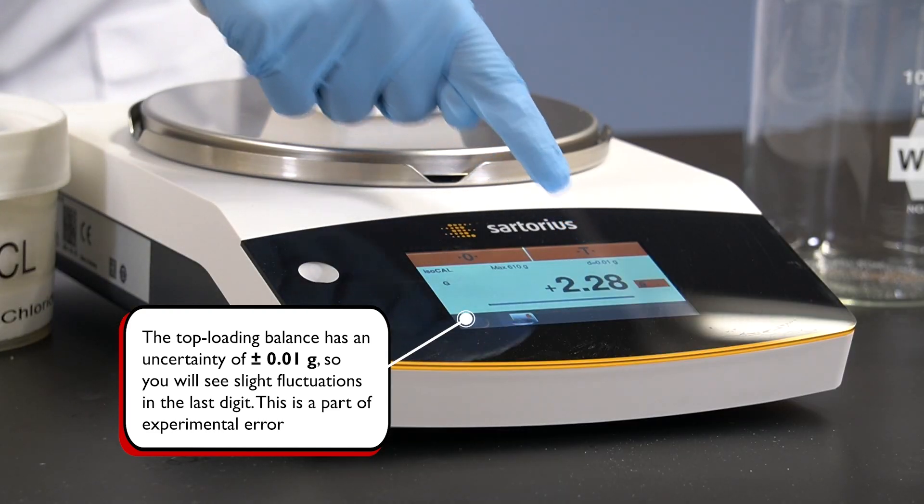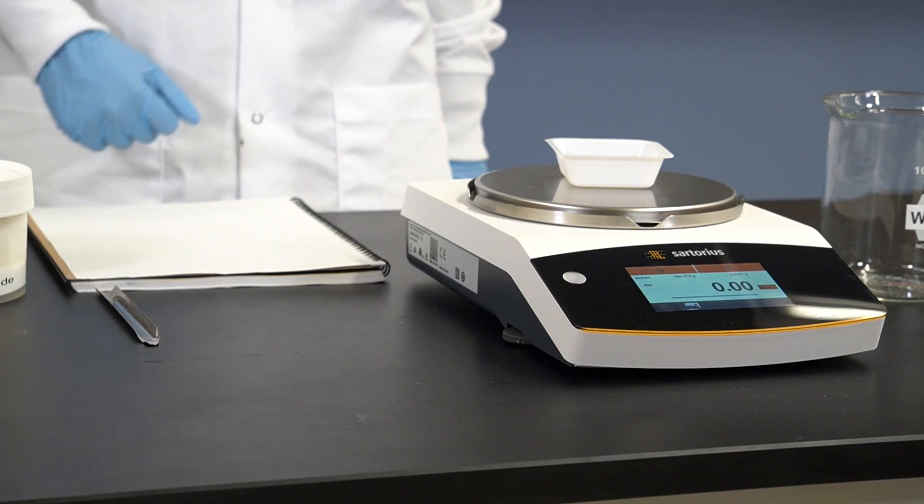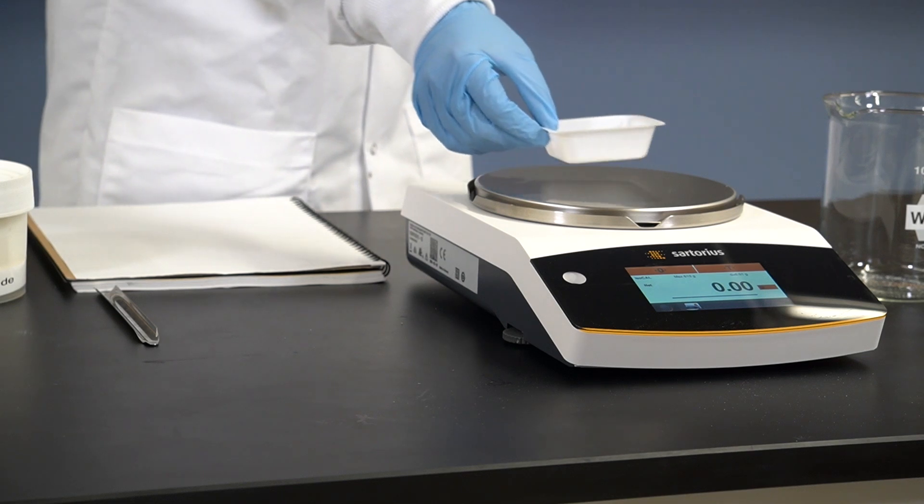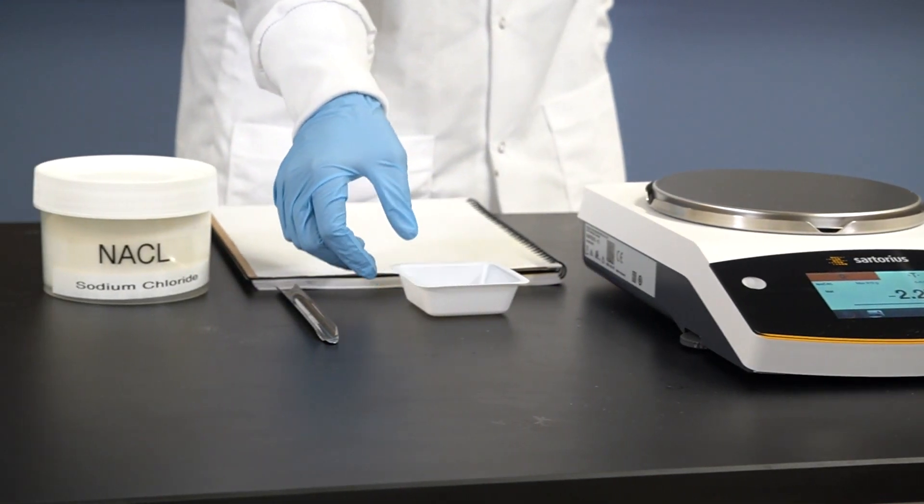Then, tare the balance again with the boat on top. Remove the weighing boat from the balance once the balance display reads zero.